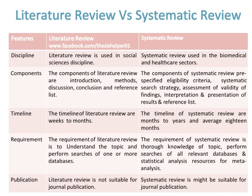The components of a Literature Review are Introduction, Methods, Discussion, Conclusion, and Reference List, while the components of a Systematic Review are pre-specified eligibility criteria, systematic search strategy, assessment of validity of findings, interpretation and presentation of results, and reference list.